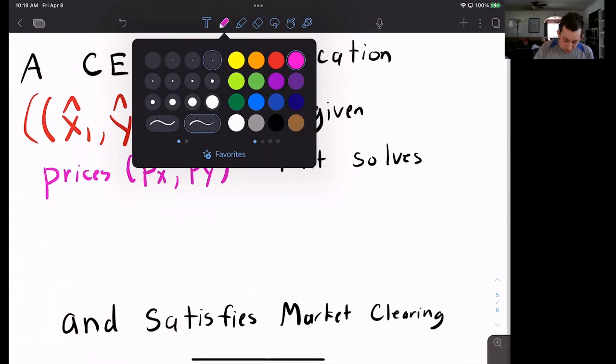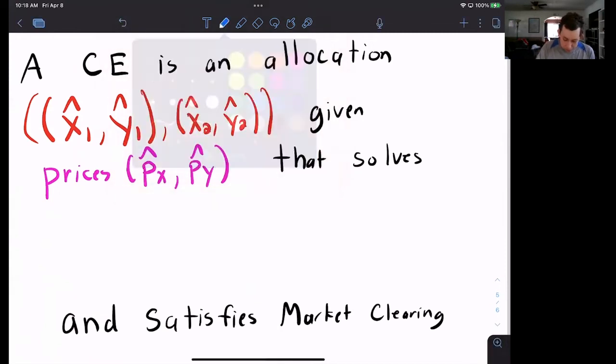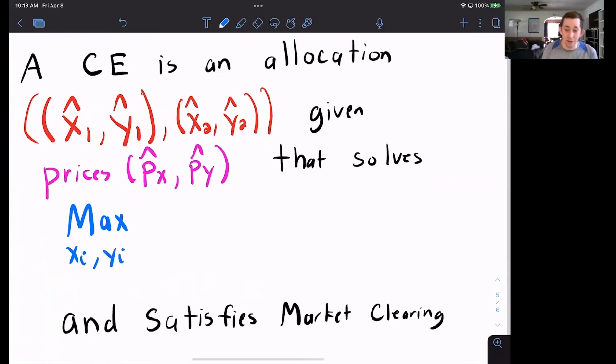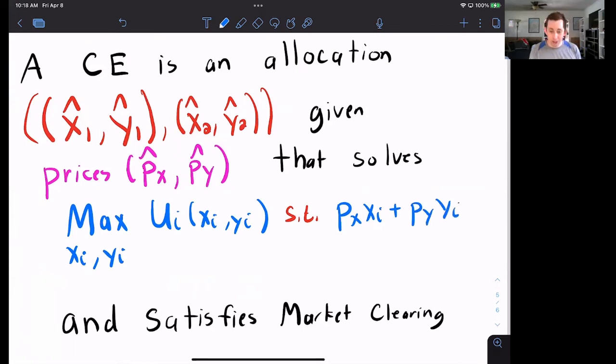What does it mean to be optimal? To be optimal means that it's going to solve the consumer problem. Max Ui(xi, yi). I'm just going to write i's instead of ones and twos, but really there are two maximization problems that need to be solved. This is the max of consumer i's utility function subject to his budget constraint: Px*xi + Py*yi.